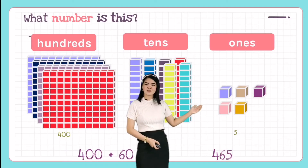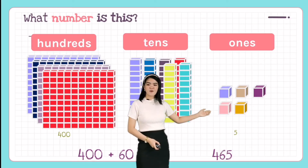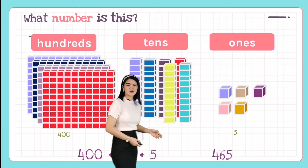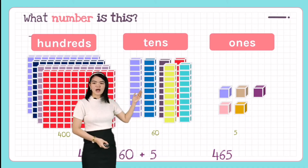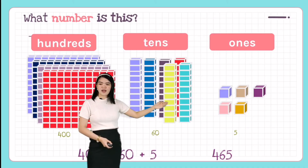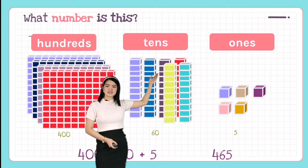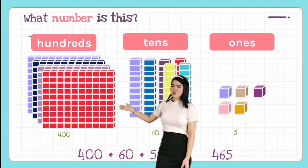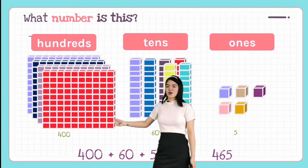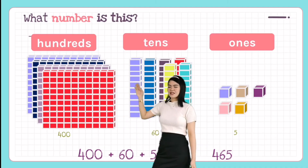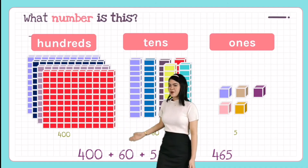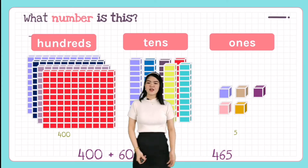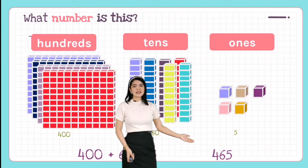The last example: how many ones? One, two, three, four, five — five is in the ones place. How many tens? One, two, three, four, five, six — sixty is in the tens place. How about in the hundreds place? We have one, two, three, four — so 400 is in the hundreds place. We write 400 + 60 + 5 in expanded form.